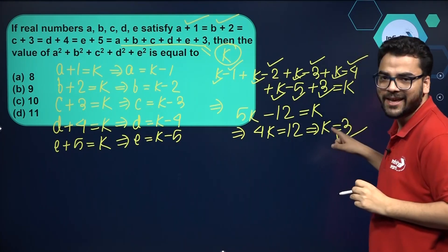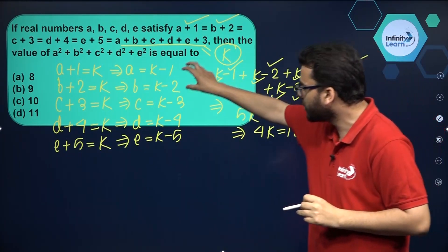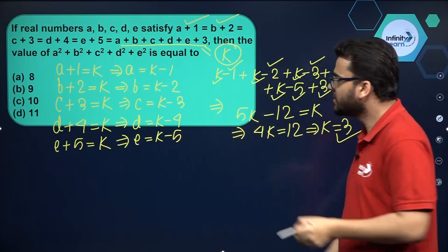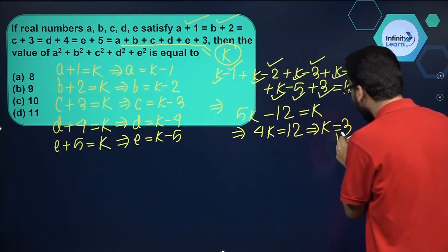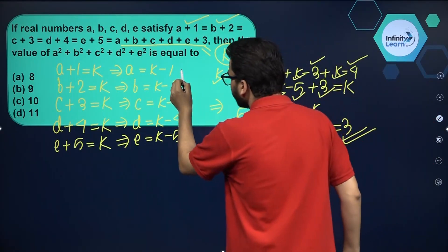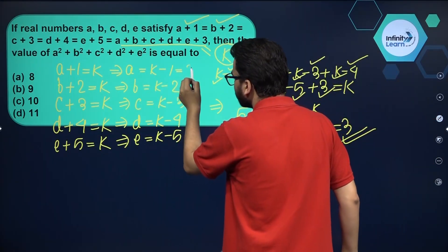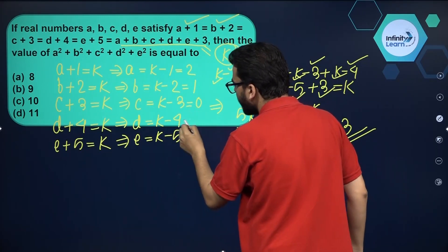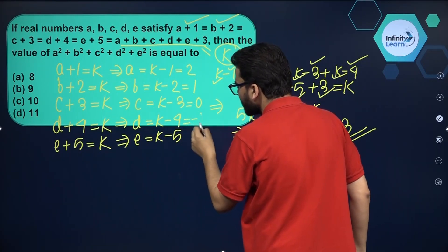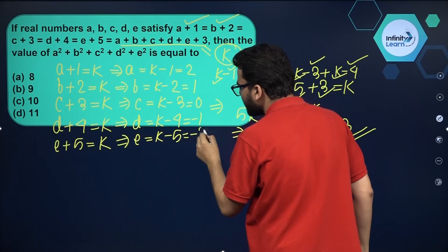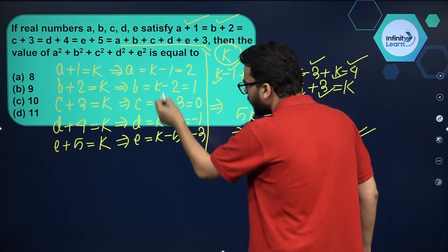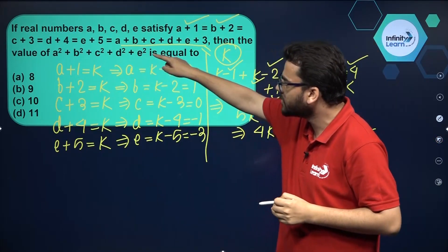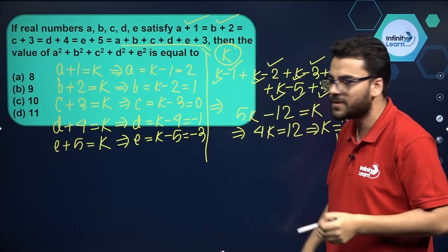Now that k = 3, we can find the values of a, b, c, d, and e. Substituting: a = 3 − 1 = 2, b = 3 − 2 = 1, c = 3 − 3 = 0, d = 3 − 4 = −1, and e = 3 − 5 = −2. Now we find a² + b² + c² + d² + e².